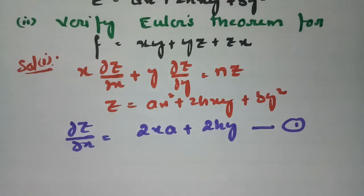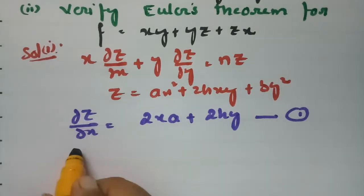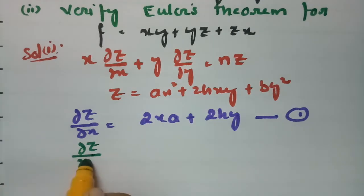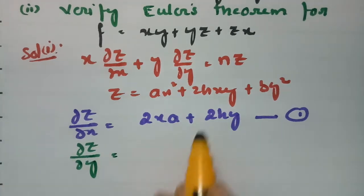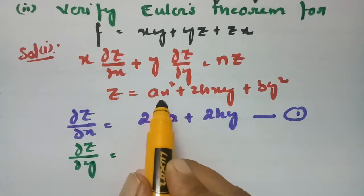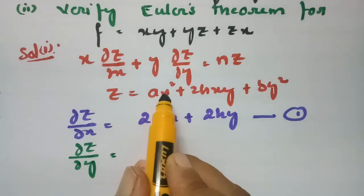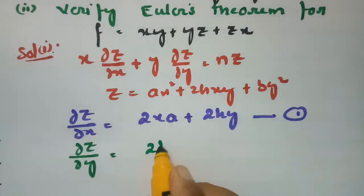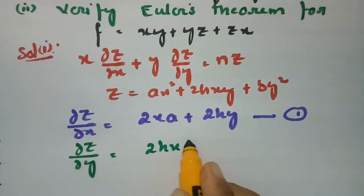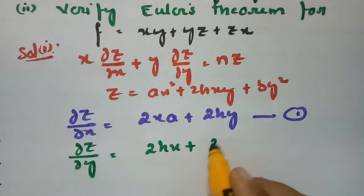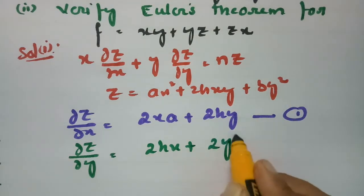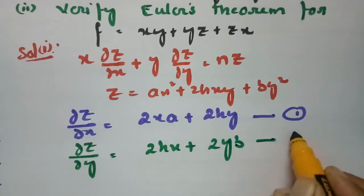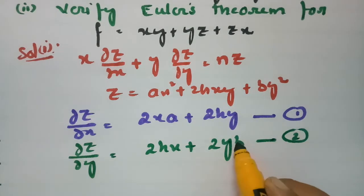Next, the derivative with respect to y: x with respect to y will be 0, for the xy term it is 2hx, and for y² it is 2by. This is equation number 2.